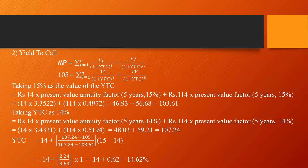The second part is to calculate the yield to call (YTC). The formula to calculate YTC is the same as for yield to maturity. The market price equals the sum of: the annual cash flow C divided by (1 + YTC) raised to t, plus the termination value TV divided by (1 + YTC) raised to n. We need to find the YTC percentage that makes the right-hand side equal to the current market price of 105, using trial and error.